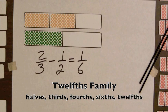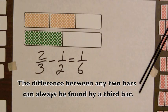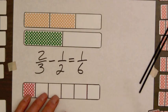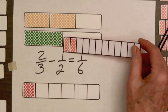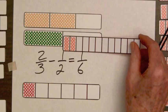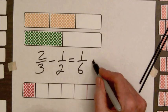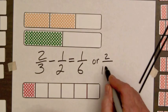For the twelfths family of fractions — the halves, thirds, fourths, sixths, and twelfths — the difference between any two bars can always be found by a third bar. We found the one-sixth bar, but we also might have used the two parts out of twelve. So we could write down here one-sixth or two-twelfths.